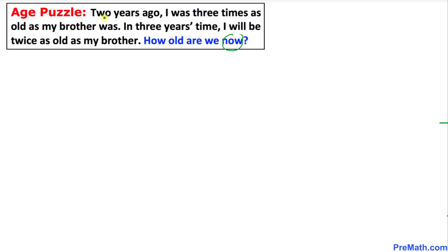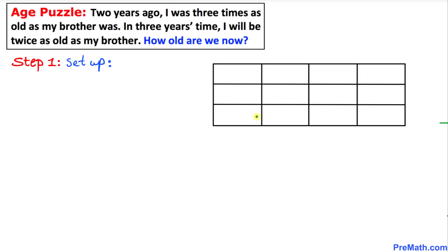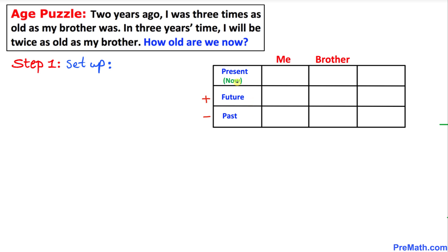Let's go ahead and get started. Here's our very first step — let's set up this problem. Here's the table we need to organize things. Since we are going to deal with three different tenses, I put down present (which means now), future, and past tense. Keep in mind: in future we add things, and in the past we subtract.